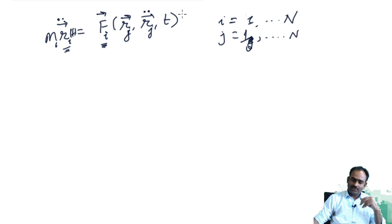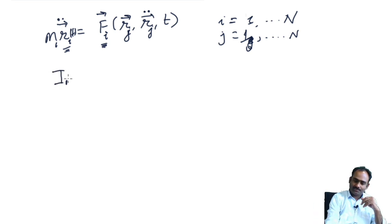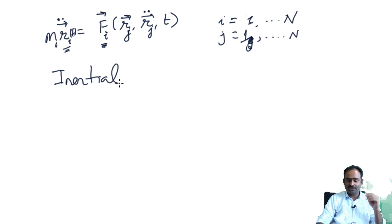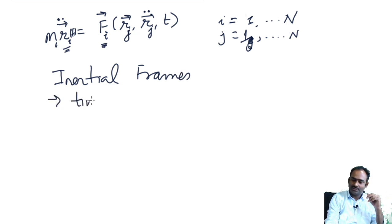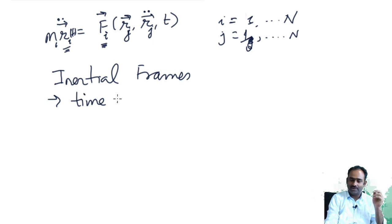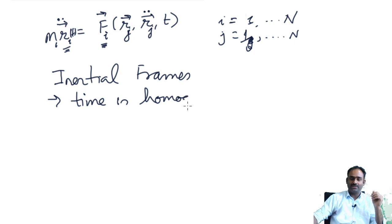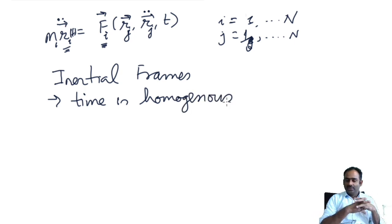So what I am saying is there exist frames of reference in which time is homogeneous — meaning whether you do the experiment now or one billion years from now, the results will be identical if you have arranged everything identically. These special frames are called inertial frames, in which time flows in a homogeneous manner.